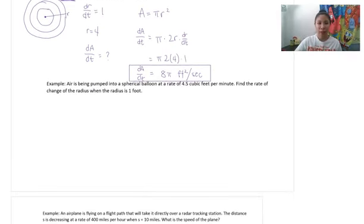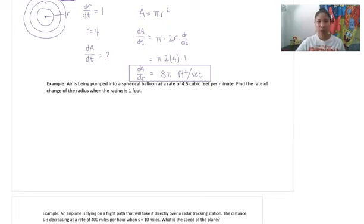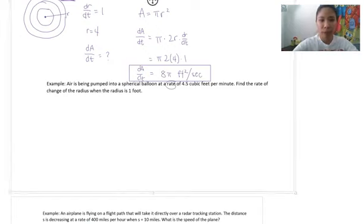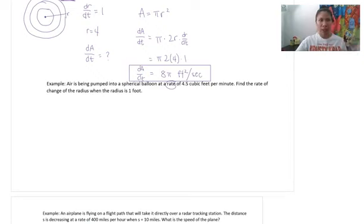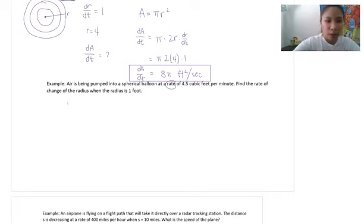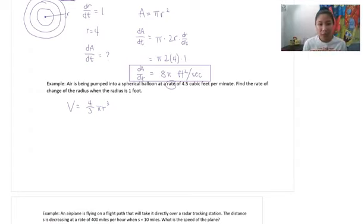Let's try another one. Air is going to be pumped into a spherical balloon at a rate of 4.5 cubic feet per minute. Find the rate of change of the radius when the radius is 1 foot. Because we're pumping air into a spherical balloon, the air takes shape as the volume of the balloon. Since it's spherical, we need the volume of a sphere, which is 4/3 pi r cubed.